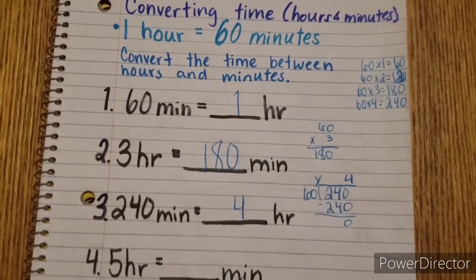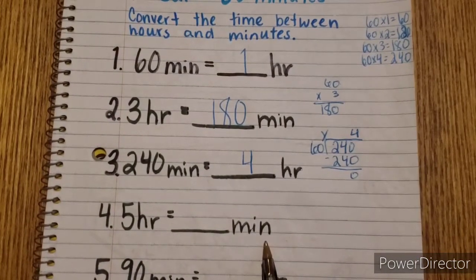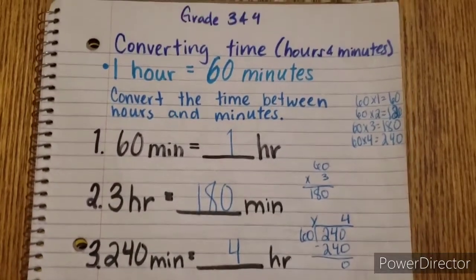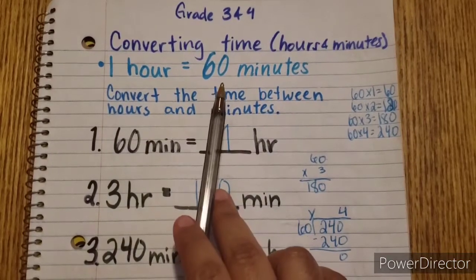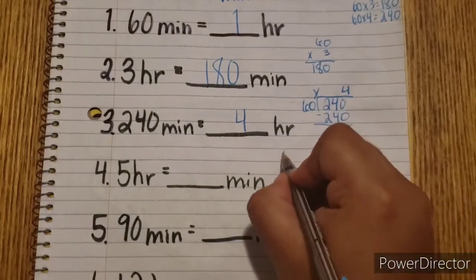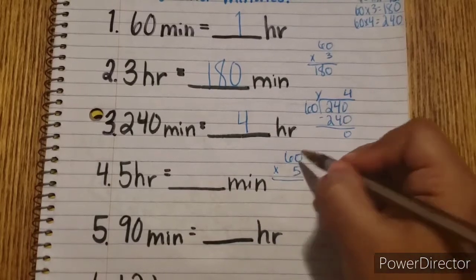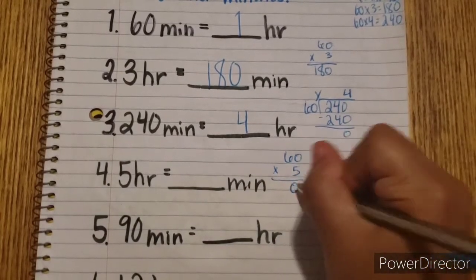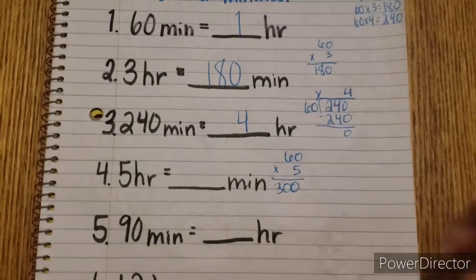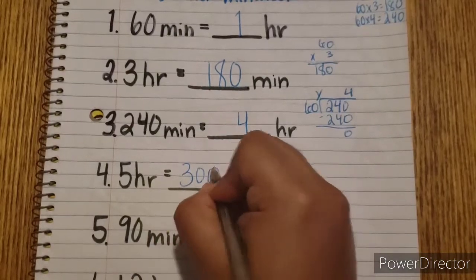Let's look at the next one: 5 hours equals how many minutes. What we need to do is multiply 5 times 60. We have 60 times 5 — 0 times 5 is 0, 6 times 5 is 30. So 5 hours equals 300 minutes.